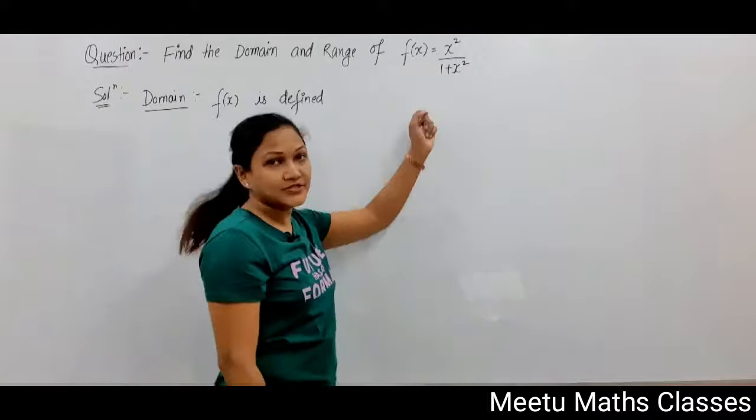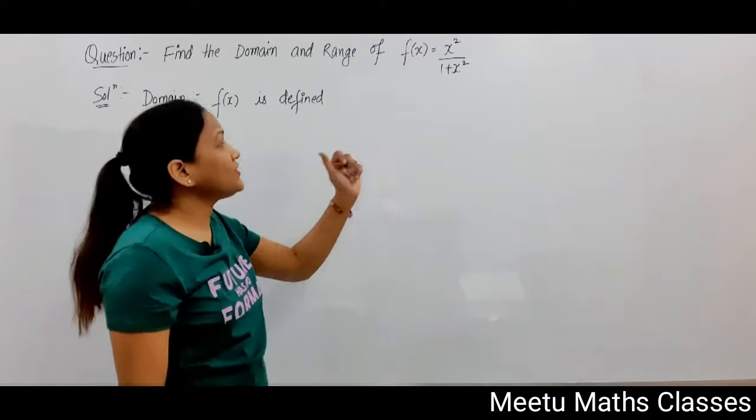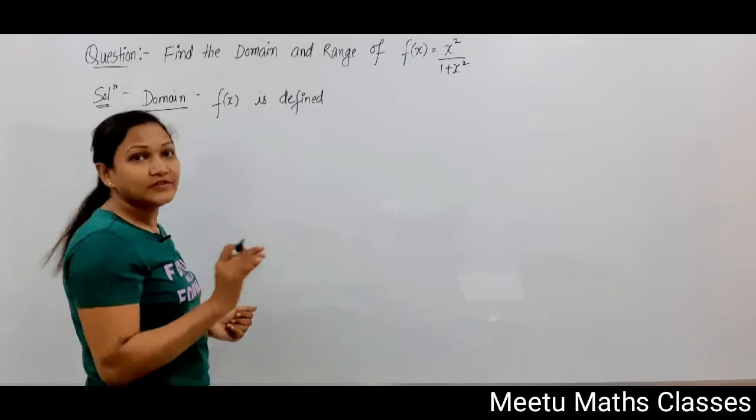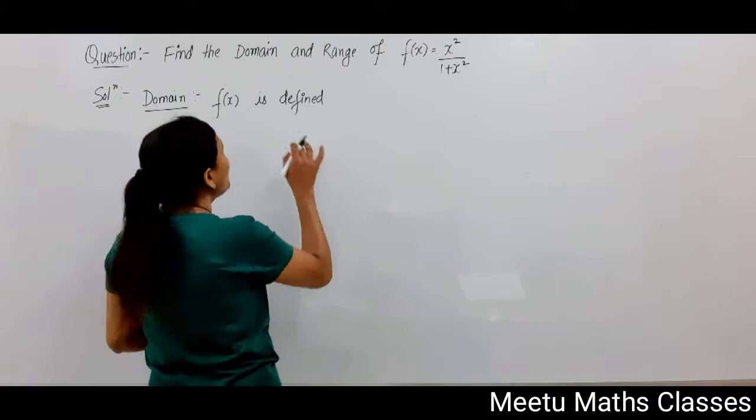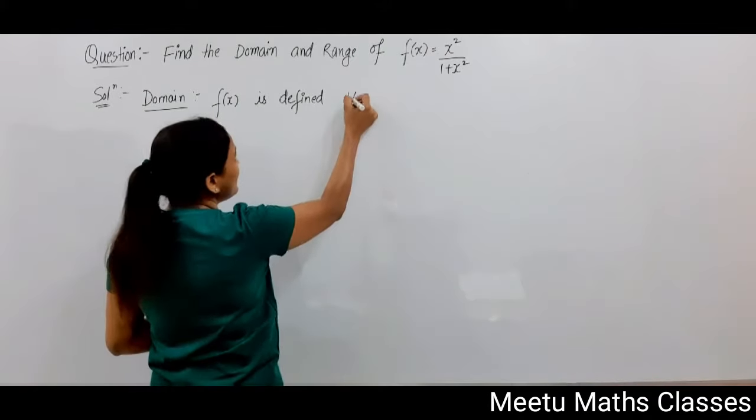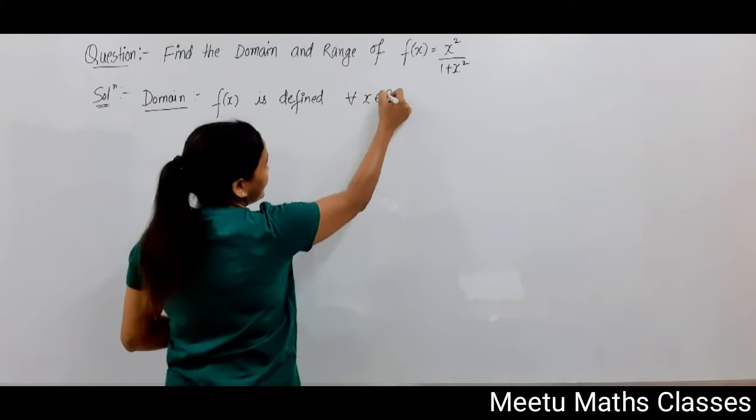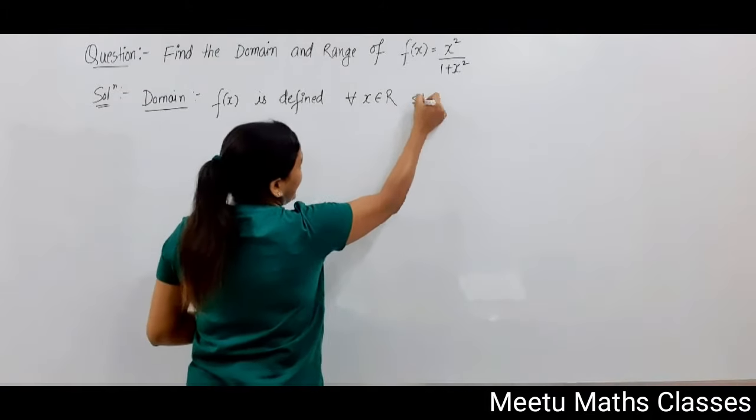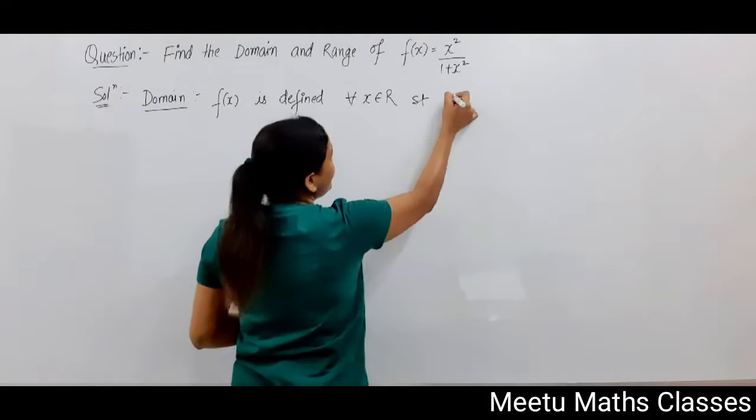Your f(x) is defined as a rational function, and for rational functions you verify that the denominator should not be zero. So your f(x) is defined for all x belongs to the real numbers such that your 1 + x² should not equal 0.